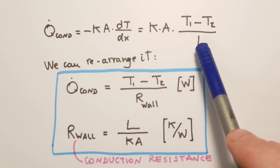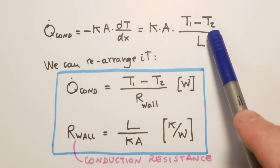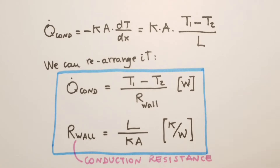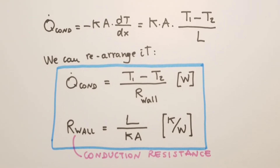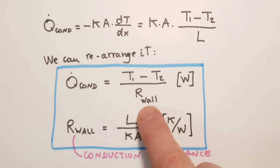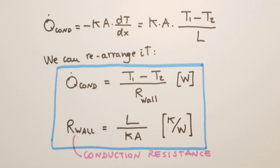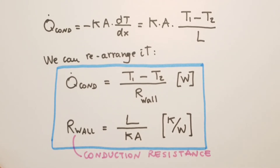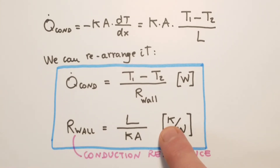We can write dT/dx as the difference T1 minus T2 divided by L. Rearranging the heat transfer expression, we write Q conduction equal to the ratio of (T1 minus T2) to R_wall, where R_wall is defined as the conduction resistance, equal to L divided by the product kA. The units of conduction resistance are Kelvin per watt.